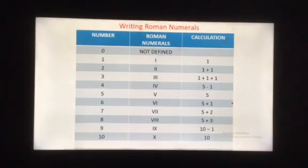Now, let's learn how to write Roman numbers. For expressing Roman numbers, we split the numbers in terms of 10s and 1s. So let's look at the table. 0 has no symbol in the Roman system, it is not defined. Symbol of 1 is I. For writing 2, we split 2 in 1 plus 1.